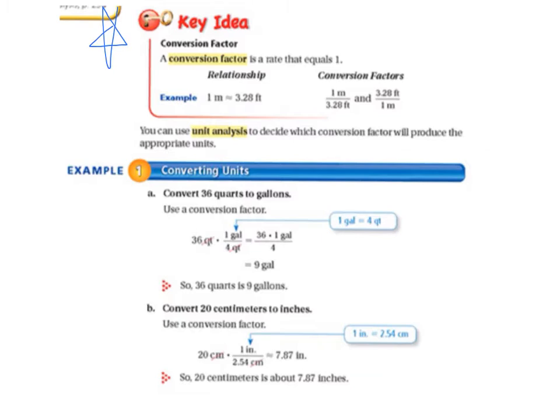A conversion factor is a rate that equals 1. An example is 1 meter is approximately equal to 3.28 feet. So that's the relationship. The conversion factors look like this: 1 meter over 3.28 feet and 3.28 feet over 1 meter. They're a fraction and the reciprocal of that fraction. You can use unit analysis to decide which conversion fraction will produce the appropriate units.